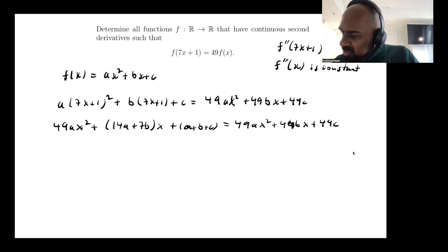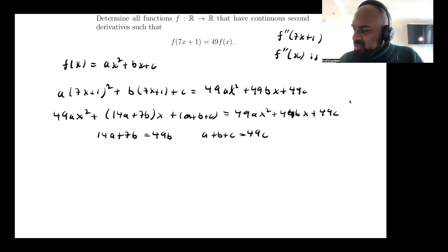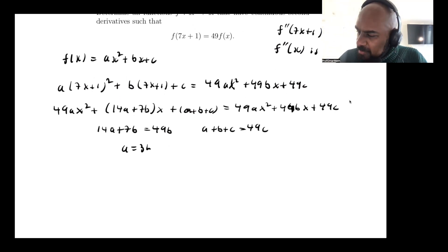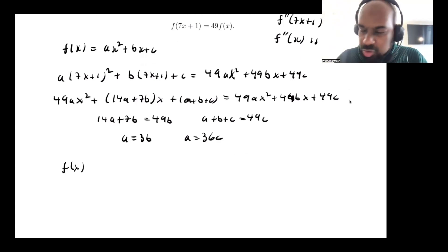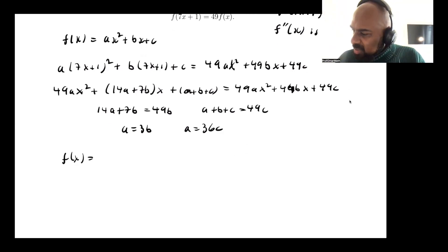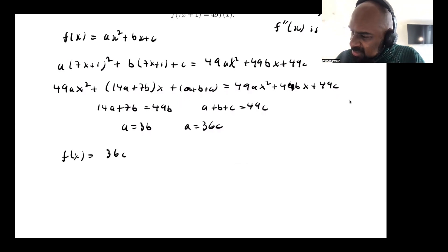So now comparing terms, we know these terms are automatically the same, and the intermediate terms give us 14a plus 7b is 49b, and a plus b plus c is 49c, from which we can solve and get that a is 3b and a is 36c. So going back to our original quadratic,